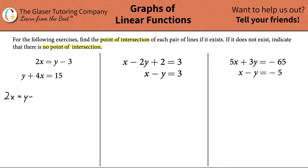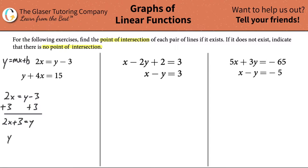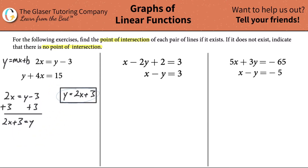For the first equation, 2x = y - 3, I need to get it into y = mx + b form. I can see y is already on one side, so I'll add 3 to the left-hand side. That gives me 2x + 3 = y, or flipping it around, y = 2x + 3. That's now in y = mx + b form.